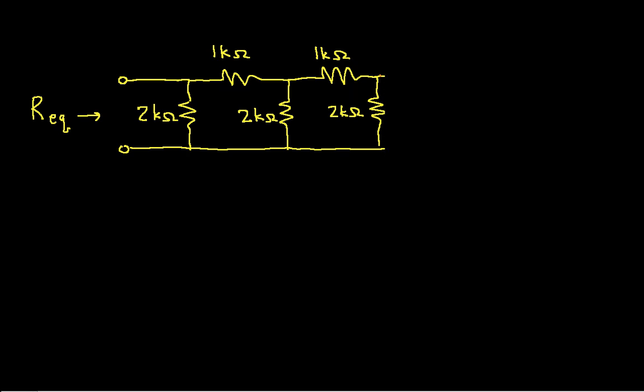Okay, so we have then our single 2k ohm resistor. Okay, so the next thing I want to do is again find either a series or parallel combination of resistors that I can come up with an equivalent resistor.